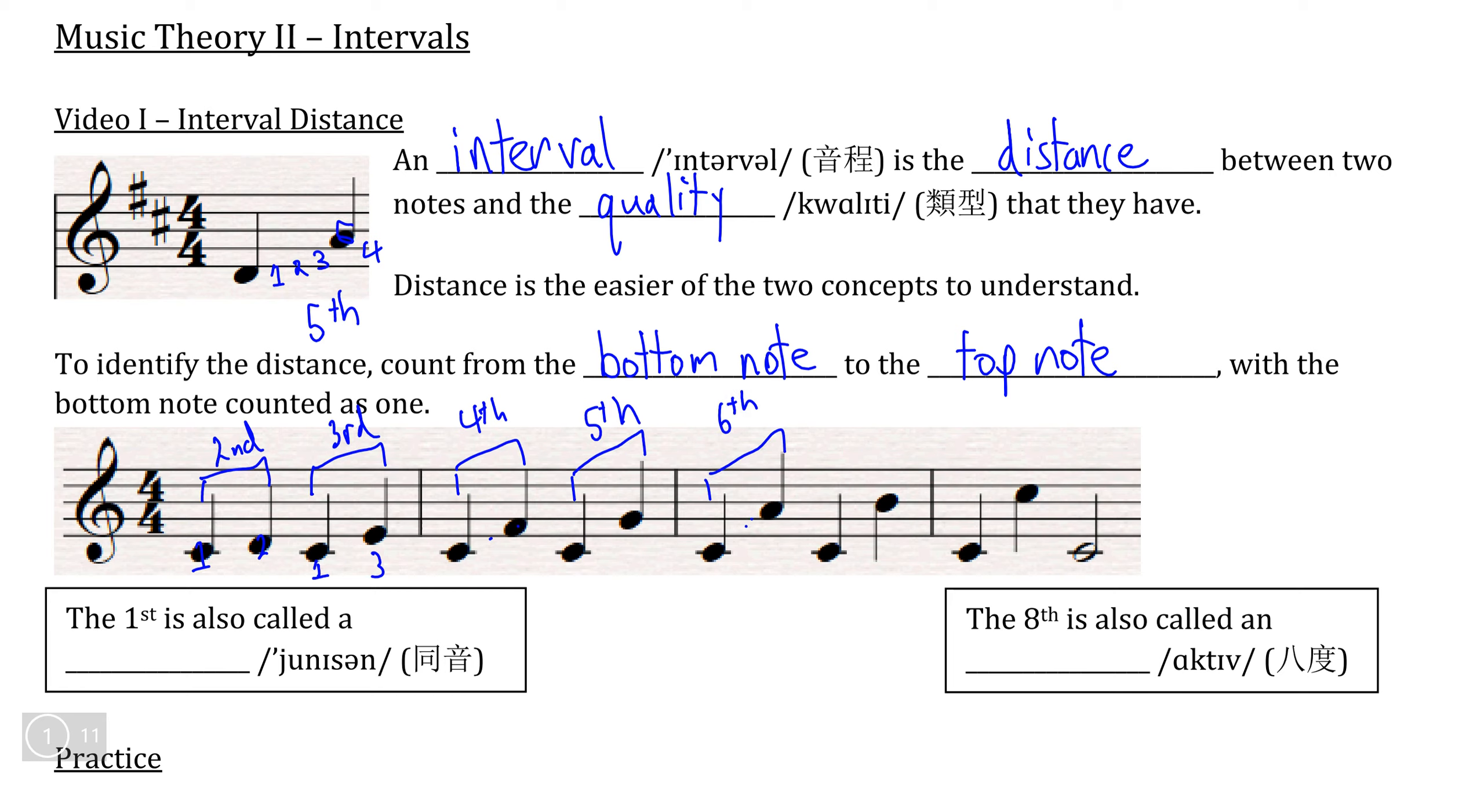C to B—C, D, E, F, G, A, B—you should have counted a total of seven times. So from C to B is a seventh.